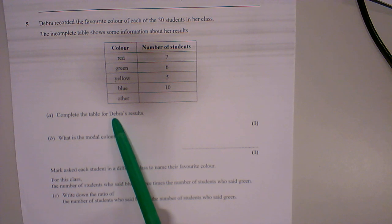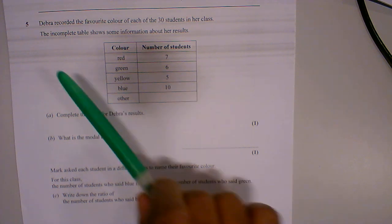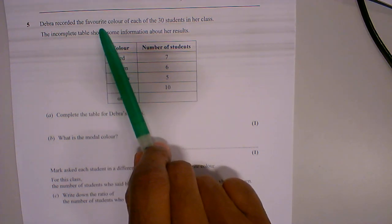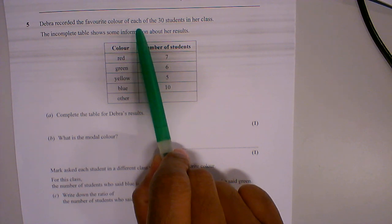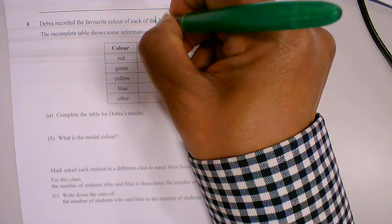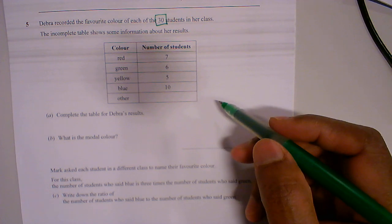Complete the table for Deborah's results. So let's read this again. Deborah recorded the favourite colour of each of the 30 students. Okay, so we've got 30.